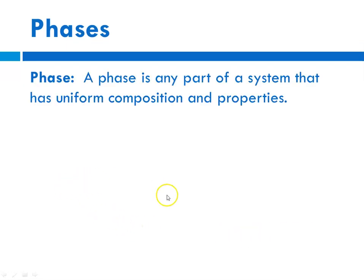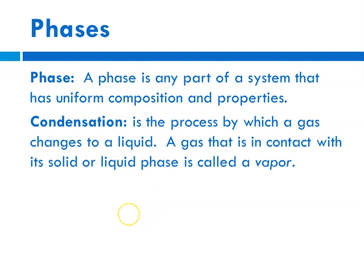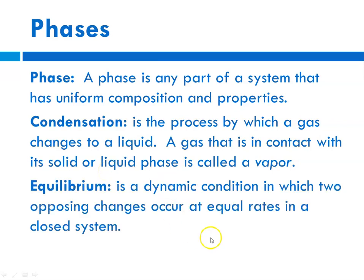A phase is any part of a system that has a uniform composition and properties. Condensation is the process by which a gas changes from the gas phase to the liquid phase. A gas that is in contact with its solid or liquid phase is called a vapor. Equilibrium is a dynamic condition that can happen inside, for instance, a water bottle. If you have a water bottle with a lid on it, on a warm day you'll start to see a fogging at the top of the bottle — the water is vaporizing and entering the vapor phase until it becomes saturated, then touches the top of the bottle and condenses back. You have the processes of condensation and vaporization occurring at the same rate — that's what we call an equilibrium.